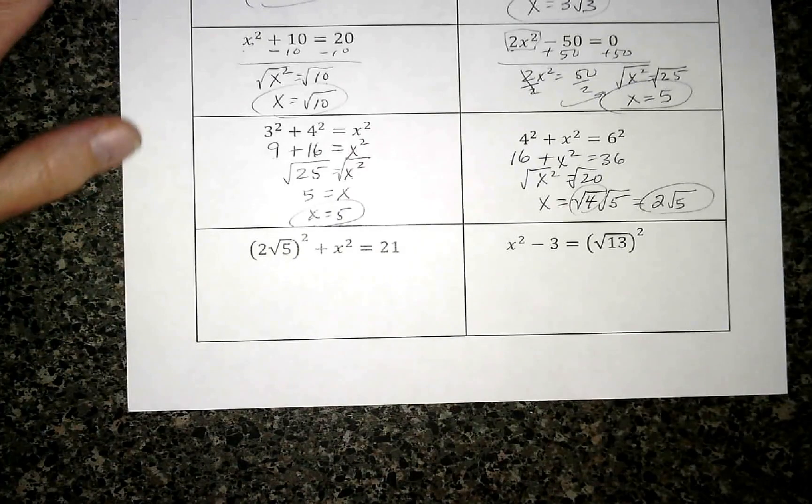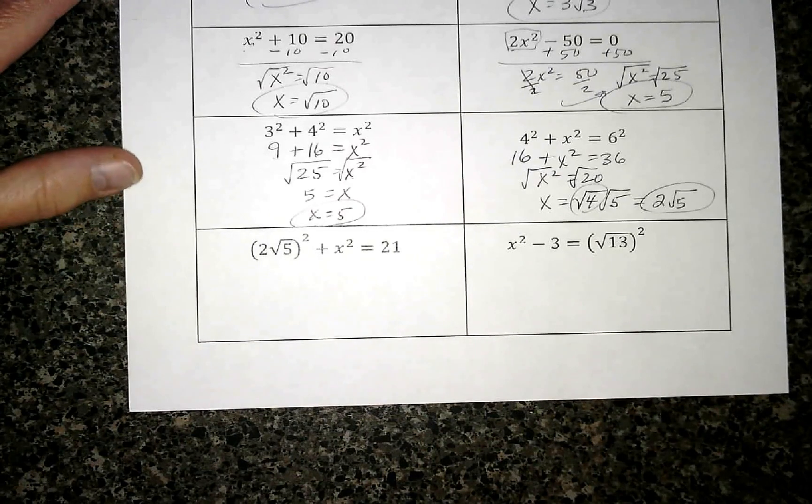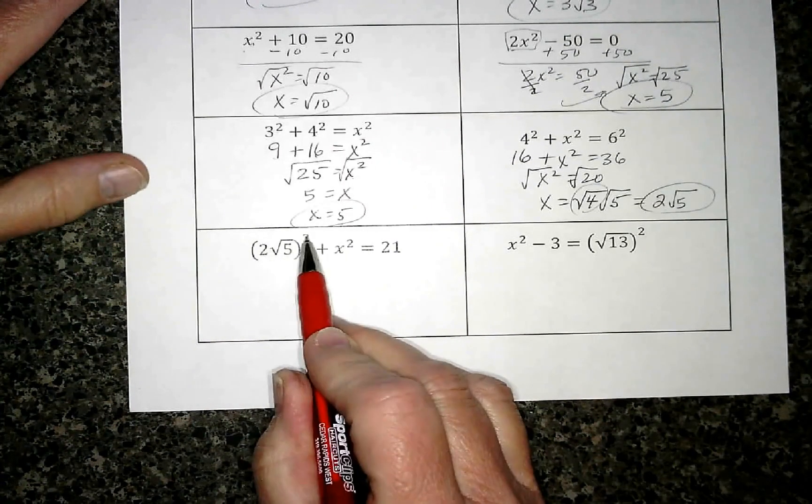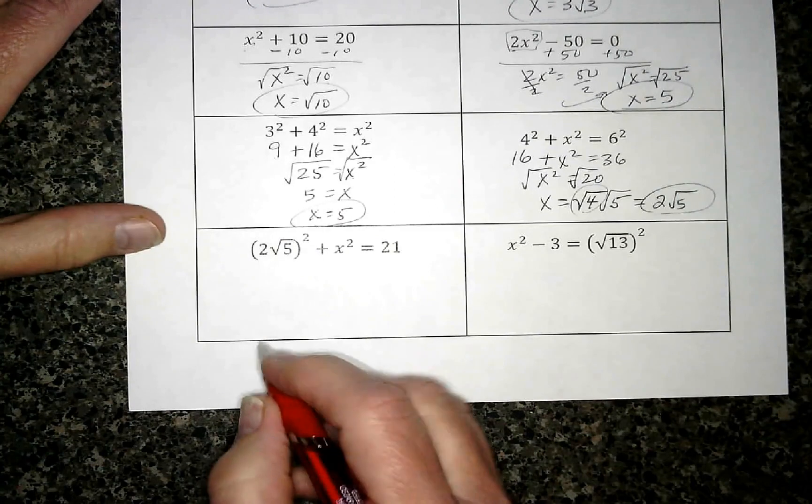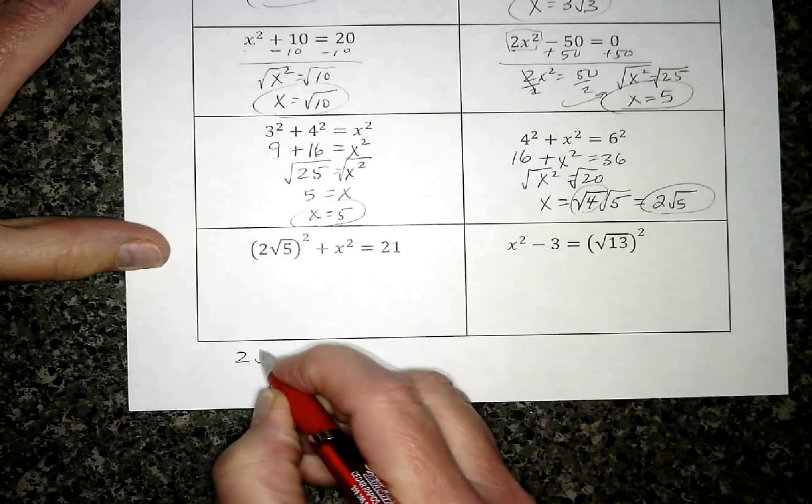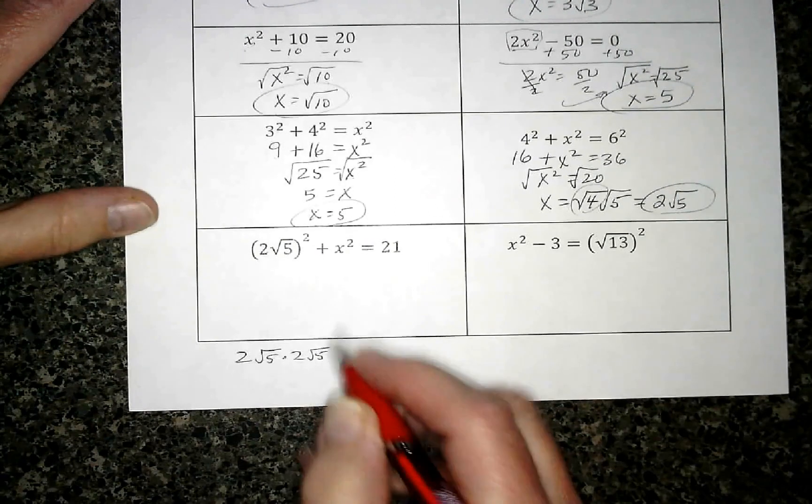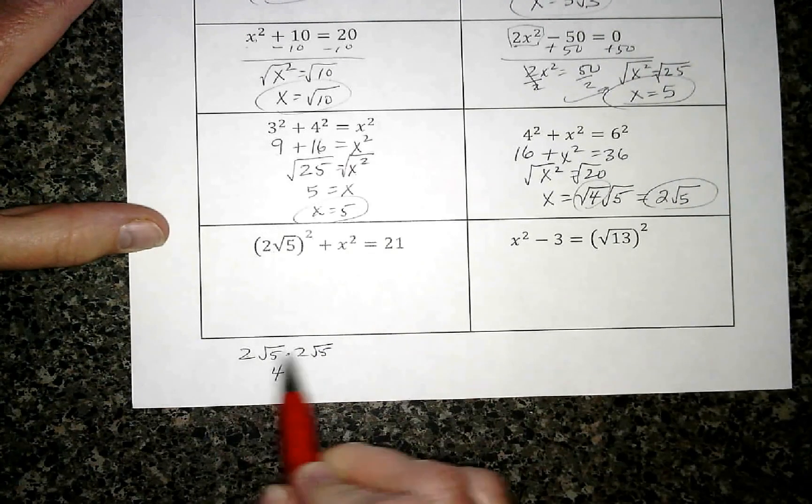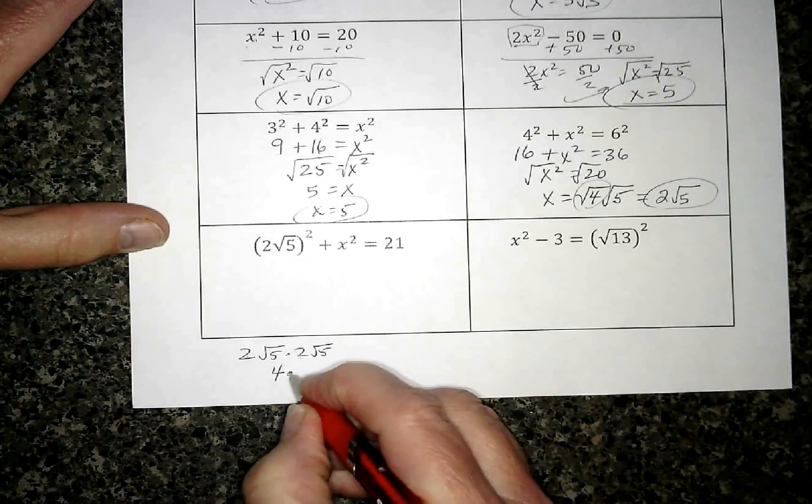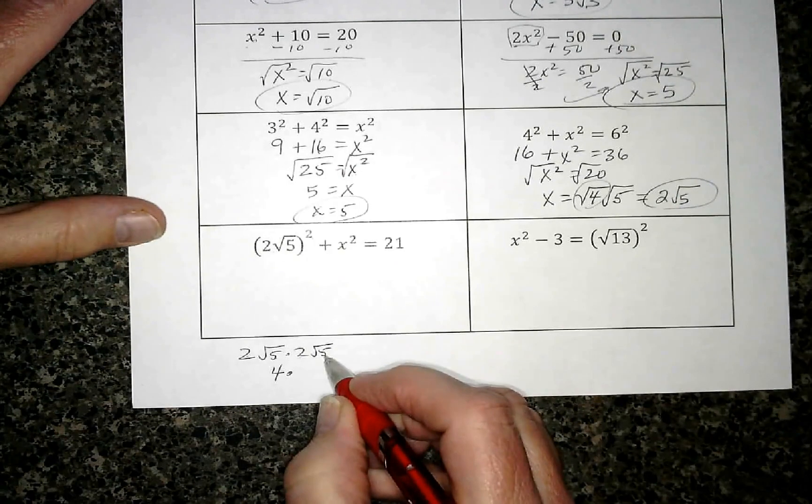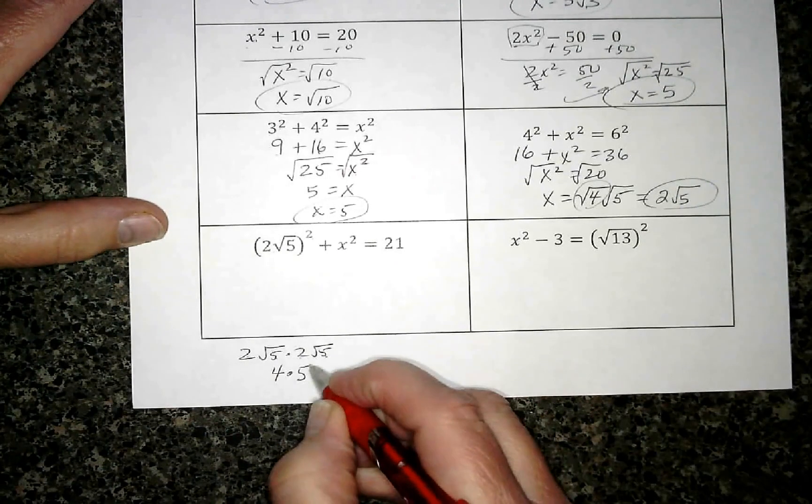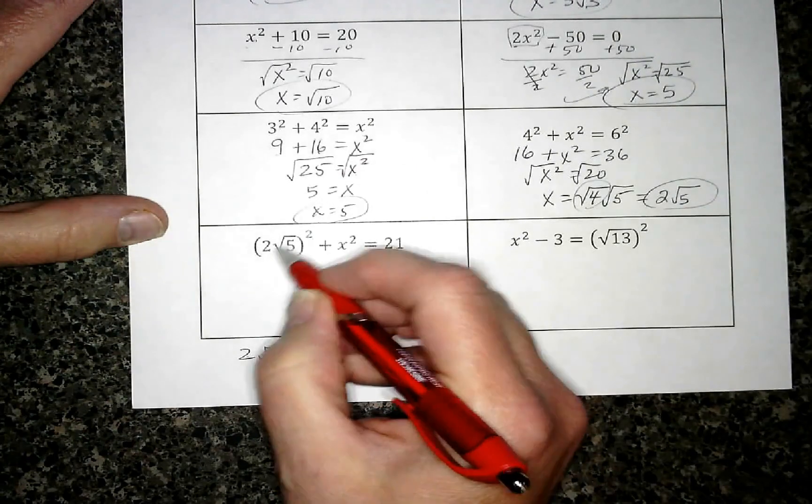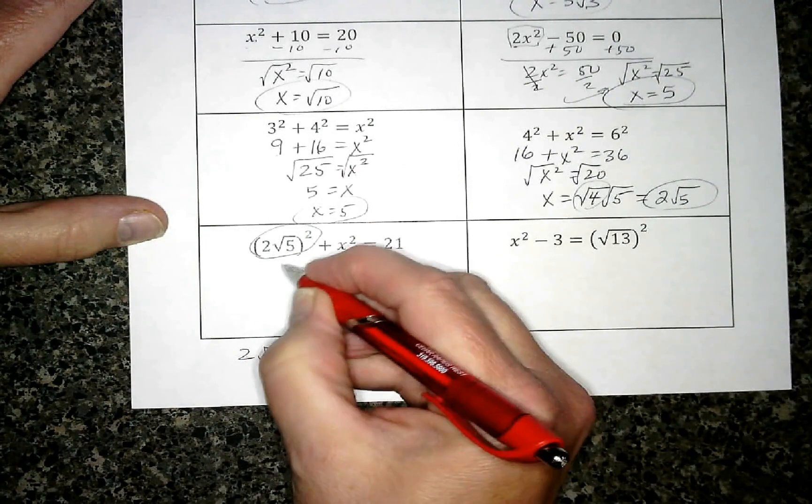These last ones are all done the same way, you just have to take your time with each of these. So this one says (2√5)². I'm just going to come down here to save us some room. 2√5 times 2√5 - that's what that means. So that's 4, because number times number, square root times square root. √5 times itself is going to be just that number. So 4 times 5 is 20. This right here simplifies to 20.